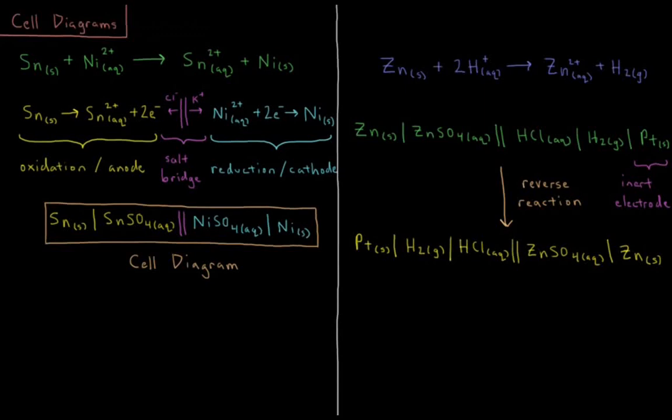This video will discuss cell diagrams in electrochemical reactions. Going back to our typical example of an electrochemical reaction, we have solid tin atoms plus aqueous nickel cations with a 2+ charge,